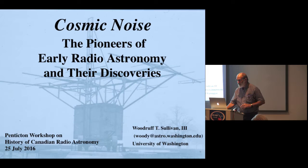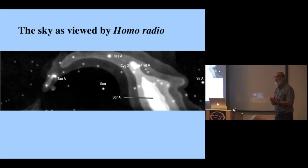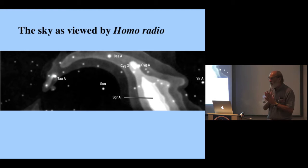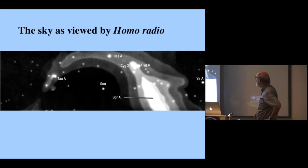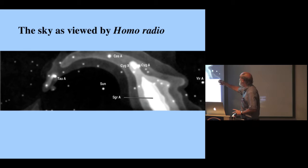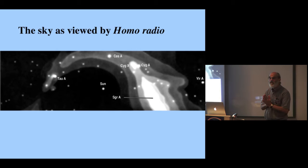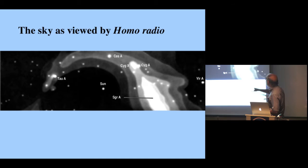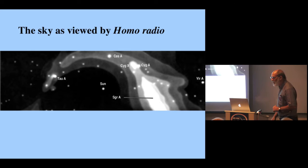I want to get us back in the flavor of that time. I call this 'Homo radio'—a new species looking at the sky. John Krause and Ron Bracewell both put together pictures like this. If you're down at 50 megahertz, where a lot of people were in that decade, the dominant thing is the Milky Way. The Sun is just another source and not as strong as Cassiopeia A.